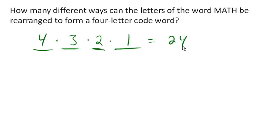Now notice that's different than saying use letters from MATH and you can have repeats. If we could have repeats, we'd have four times four times four times four, or four to the fourth, different code words, and that'd be 256 different code words. We'd have a lot more if we allowed repeats, but here we're not allowing repeats. We end up with 24 possibilities.